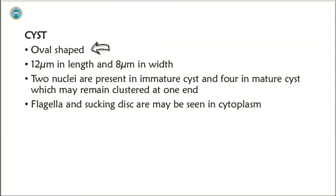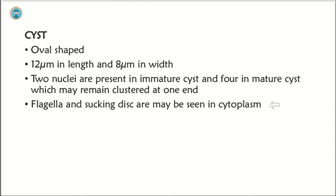Cysts of Giardia lamblia are oval-shaped, 12 micrometers in length and 8 micrometers in width. Two nuclei are present in an immature cyst and four are present in a mature cyst, but they remain clustered at one end. Flagella and sucking disc may also be seen in the cytoplasm of the cyst.